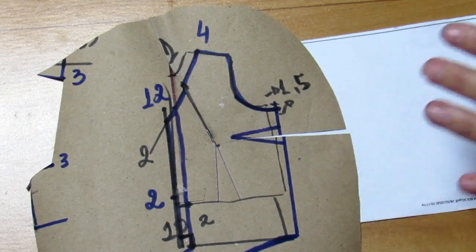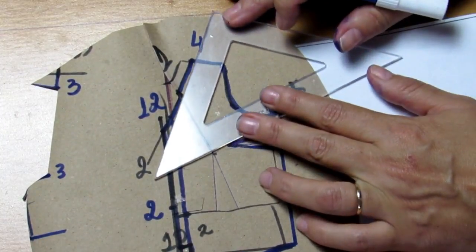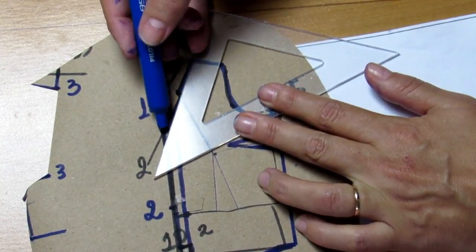So I transferred the neckline dart volume, this hidden dart, to the bust dart. Now I glue a little paper underneath to compensate for this opening made in the bust dart. The neckline, when I did the dart transfer, it got a little bump there. We redo it, leaving it straight.